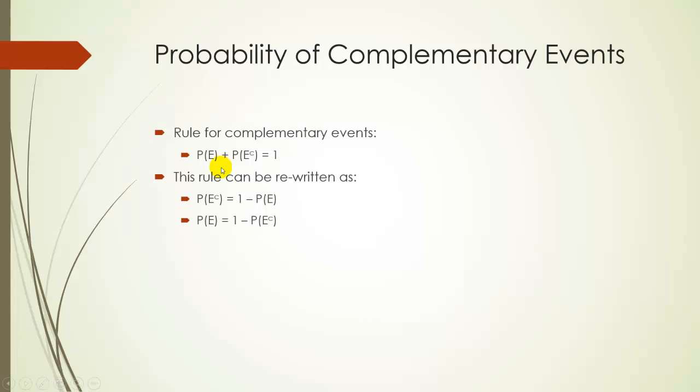So another way to rewrite this rule, just a little bit of algebra, is if you solve for P(E complement), you would get 1 minus P(E). And then if you want to define P of E, it would be 1 minus P of E complement.